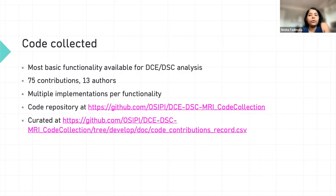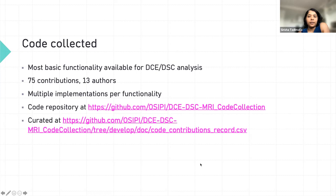At the moment we have code for most of the basic functionality for DCE and DSC analysis. At current count there are 75 code contributions from 13 authors. For each functionality there are more than one contribution, but there are also many functionalities for which we require more contributions, especially for the DSC analysis pipeline. The more contributions there are, the more scientifically valid the test results will be. The code has been collected into a GitHub repository and curated, with a detailed CSV file describing each contribution's author, institution, and function.